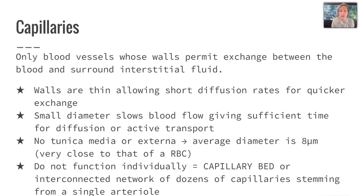Those arteries branch off into capillaries, which are the only blood vessels whose walls permit exchange between the blood and surrounding interstitial fluid. Their walls are thin, which allows for short diffusion distances and quicker exchange. They have a small diameter that slows the blood to give sufficient time for diffusion or active transport, and they have no tunica media or externa. They're very small with an average diameter of 8 micrometers, and they cannot function individually — you need a capillary bed, which is an interconnected network of dozens of capillaries that stem from a single arteriole.